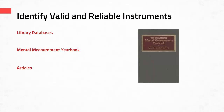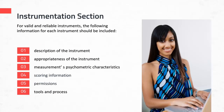Now that you understand the key characteristics to look for in a measurement, let's talk about how to identify a valid and reliable instrument for your study. I highly recommend using library databases to look for validated instruments and validation articles. The Mental Measurement Yearbook, usually located in library databases at universities and colleges, can also be useful. And as you read through the literature for your dissertation or thesis, look at the instrumentation sections — what are other researchers using to measure the construct you're interested in?